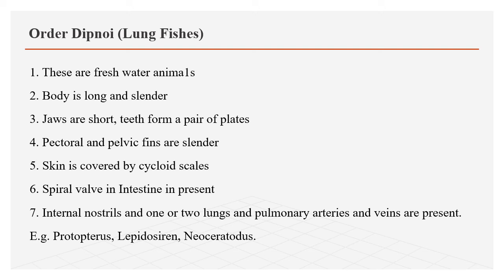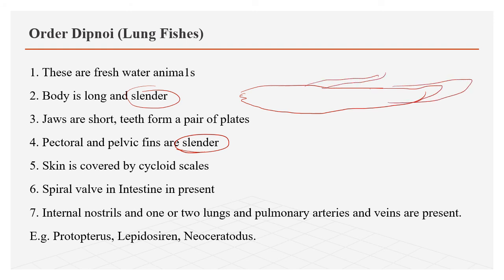In Dipnoi, the body is long and slender, jaws are short, and teeth form a pair of plates helpful for crushing food. Pectoral and pelvic fins are slender. They have cycloid scales. Spiral valve is present. Internal nostrils — one or two — are present. Examples: Protopterus in Africa, Lepidosiren in North America, and Neoceratodus in Australia — showing discontinuous distribution.